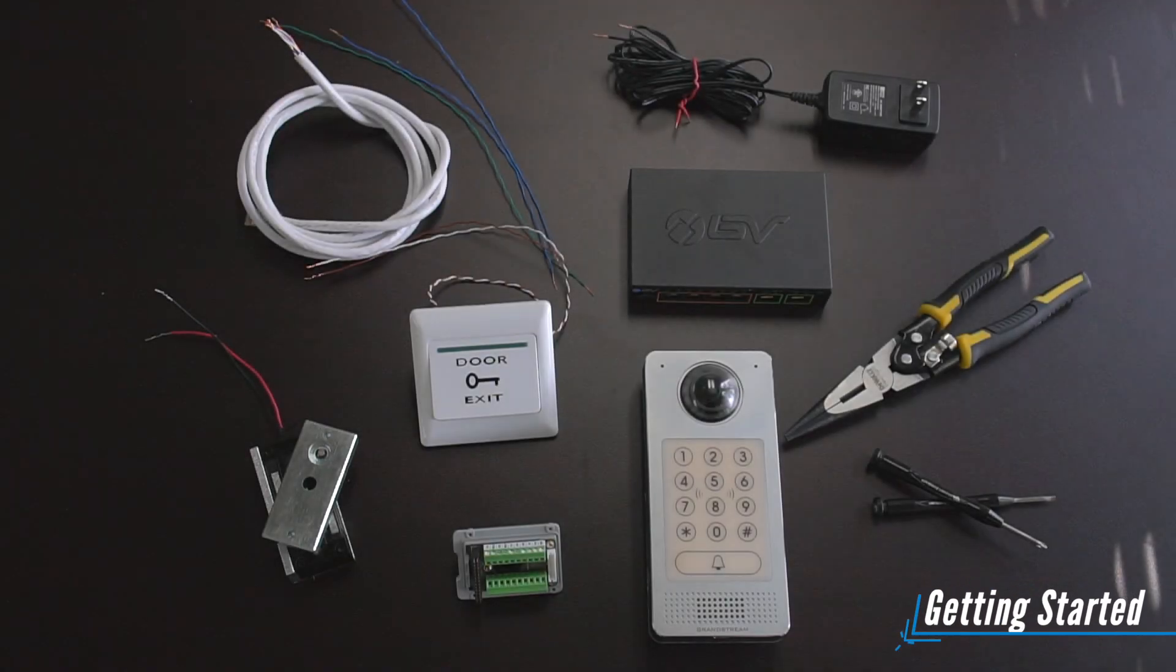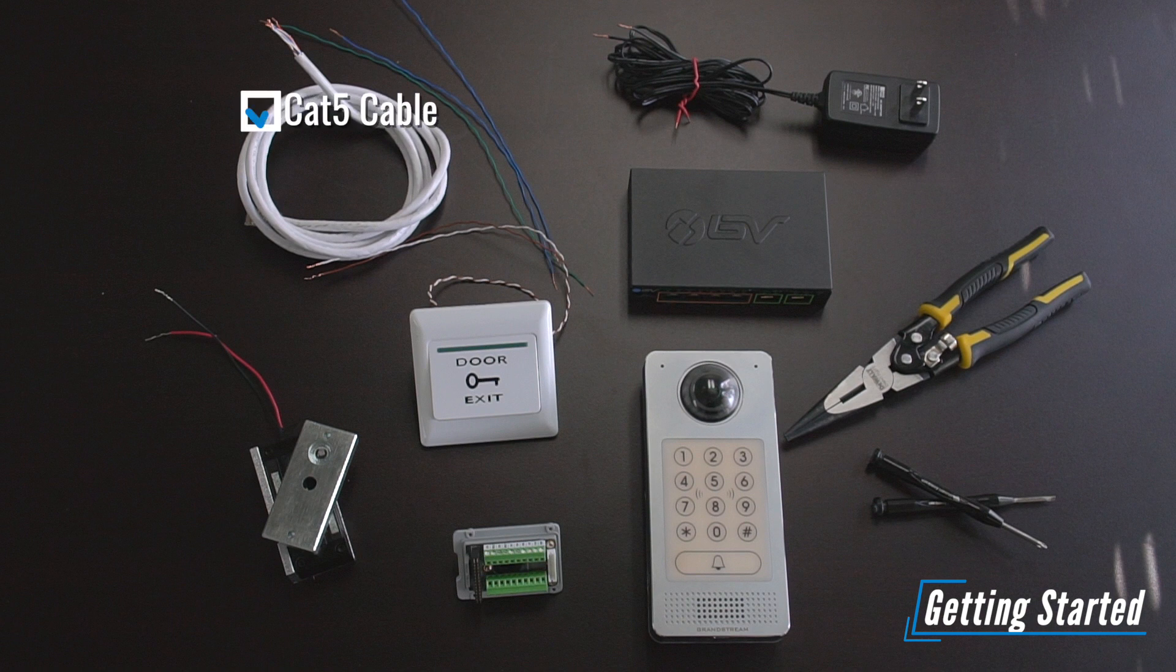Alright, so before we begin you might want to make sure you have a couple of these items. We definitely need cat5 cable, one with the RJ45 connection, the other end can be crimped with the wires exposed. That's going to be the end that we're going to be connecting to the GDS.